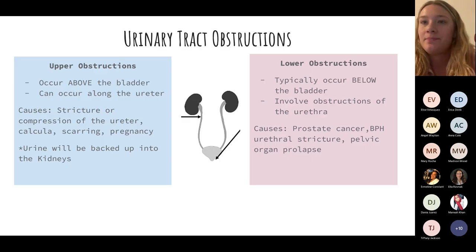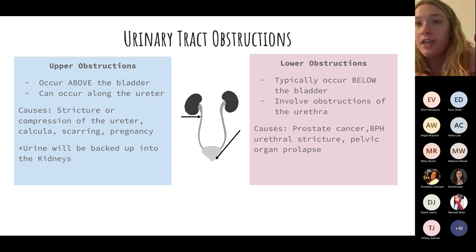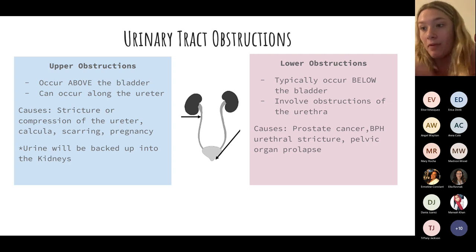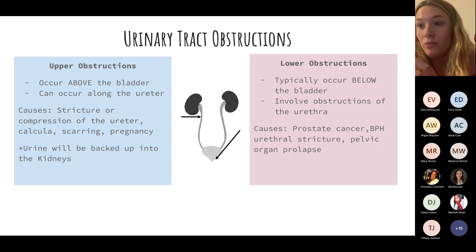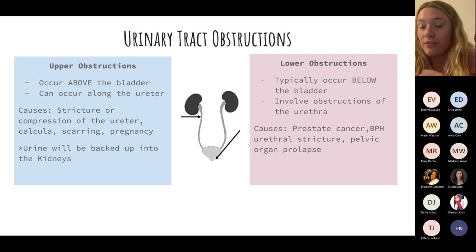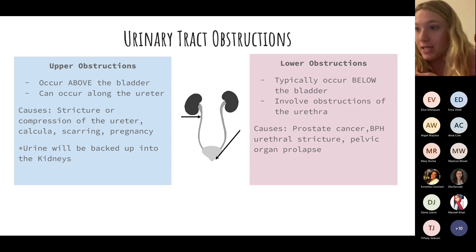One of our common pathophysiological processes is urinary tract obstructions. For upper obstructions — think above the bladder — there's an obstruction usually on the ureter. This causes a backup of urine, and if the obstruction is higher up on the ureter, that urine can back up all the way into the kidney, into the nephron and glomeruli.